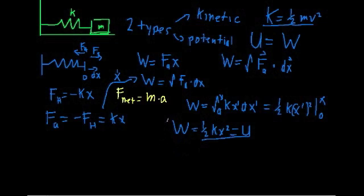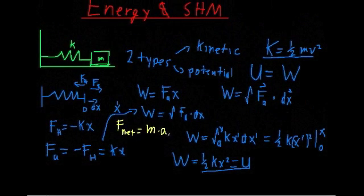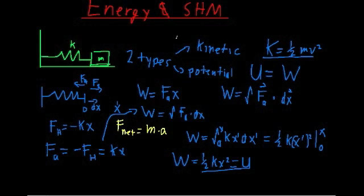Welcome back. In the last video we talked about energy involved in a mass and spring system, and we said that there are only two types: kinetic and potential. We found mathematical expressions for both: K equals one-half mv squared and U equals one-half kx squared.